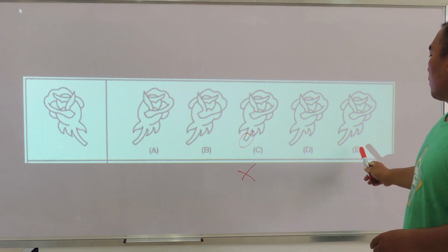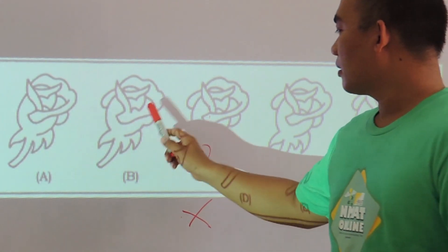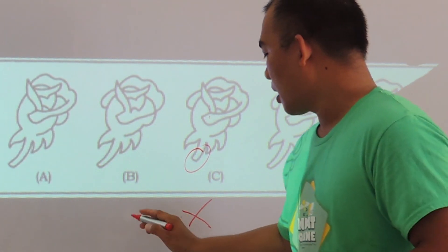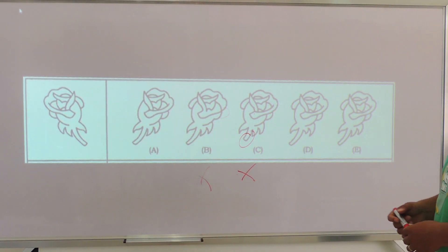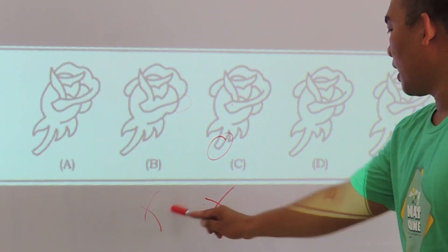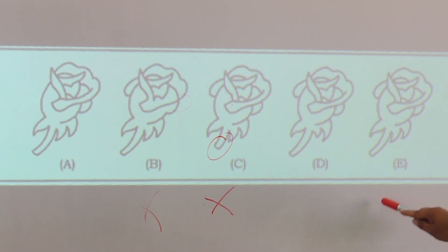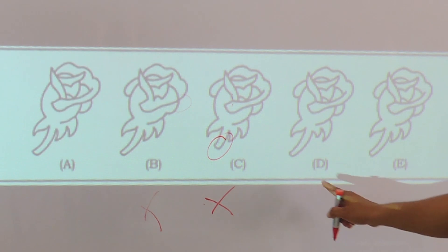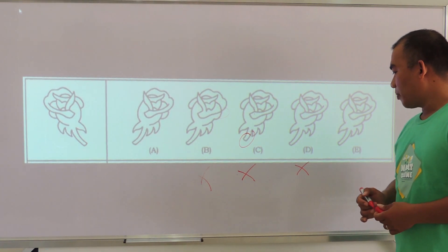Next, we are going to focus on another part of the figure. I could eliminate option B due to absence of that element. Options B and C are now eliminated, so I am going to focus on A, D, and E. Looking at the next part, D is different, so therefore I could eliminate option D.